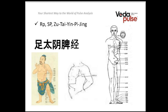In Chinese it is called Czu Tai In Pin Dzing. The first part, Czu, means it is connected to our legs — this channel starts at the big toe. Tai In indicates the energetic axis Yin. P is Spleen in Chinese, and Dzing, as you know, means channel or meridian.